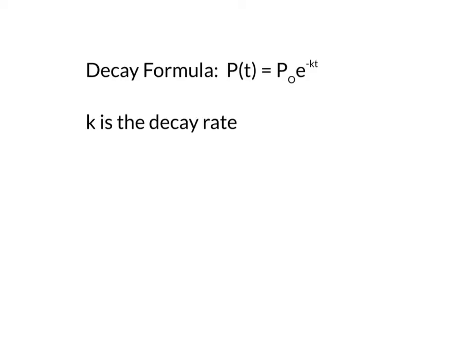Yesterday we worked on exponential growth, so today we're going the opposite direction — exponential decay, seeing how things decay and the decay rates. The big formula today is the decay formula, which looks just like yesterday's except for one major exception: our rate k is a negative rate, that's what makes it go down. k is the decay rate, t is time, e is 2.71828, and P-sub-zero is the initial population or initial amount.